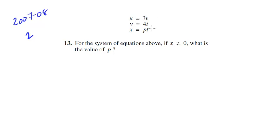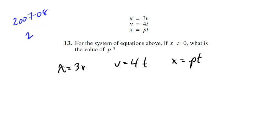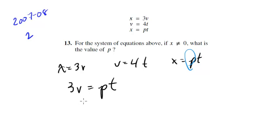Let's take the information a piece at a time. We have x is 3v, we have v is 4t, and we have x equals pt, and we want to know what p is. Let's notice something interesting — just like in the last couple problems, we have x equals 3v and x equals pt, so let's just go ahead and set them equal. So 3v is equal to pt. We want to solve for p, so we get p equals 3v over t.